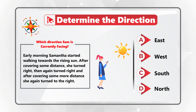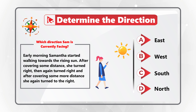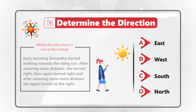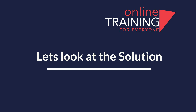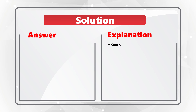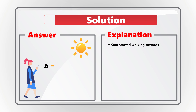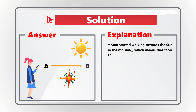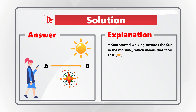One tip is to draw a diagram to help with direction. Let's start from the beginning. When Sam started walking early morning and faces the sun, it means she faces east, because the sun rises in the east.